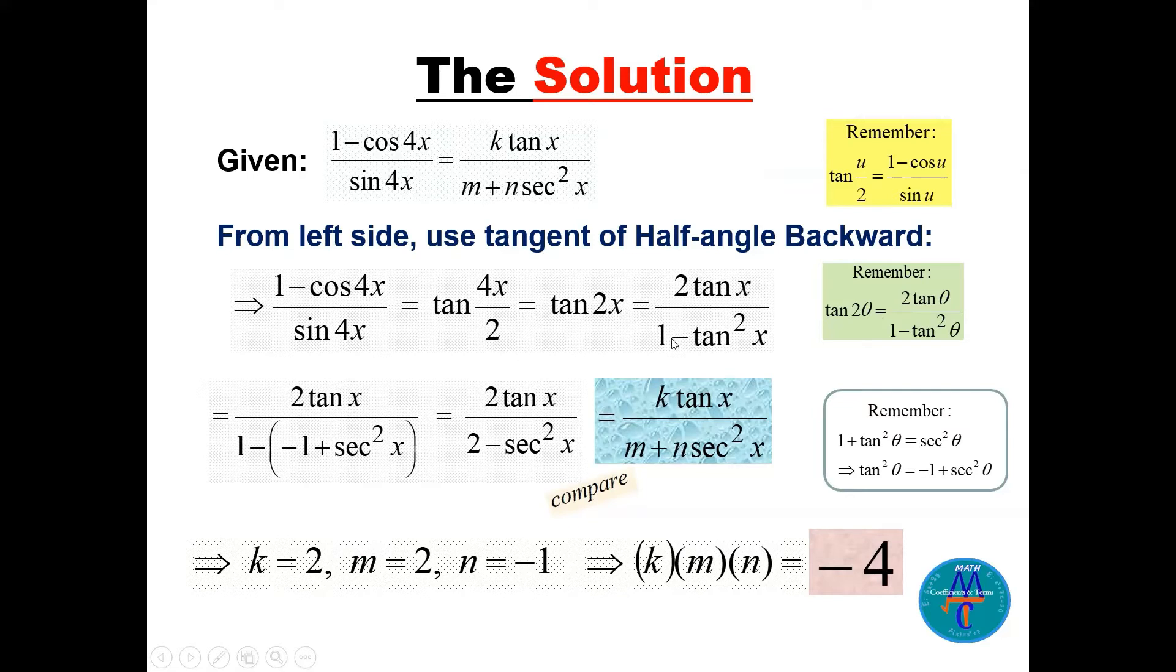So 2 tan x divided by 1 minus tan squared x. Now remember the formula: 1 plus tan squared theta is equal to secant squared theta. Tan squared theta will be minus 1 on the other side plus secant squared theta. So I can replace this tan squared x inside the bracket here with minus 1 plus secant squared theta, which is x in this case.